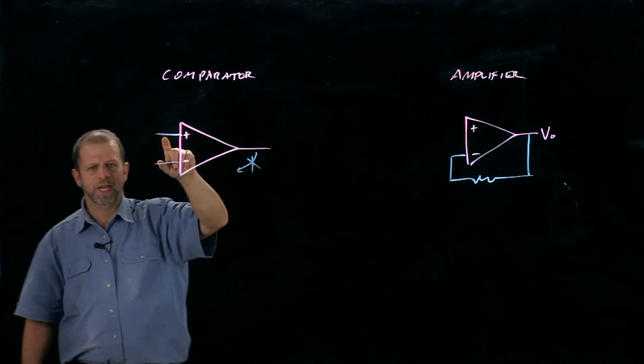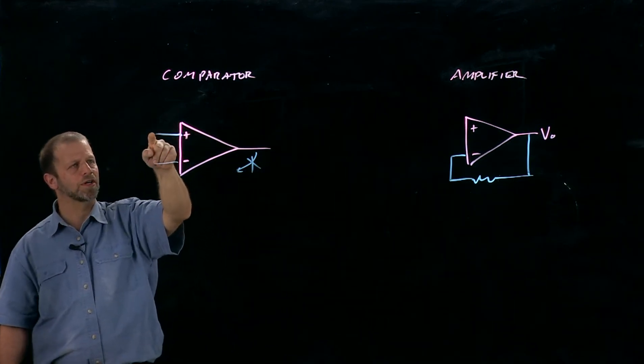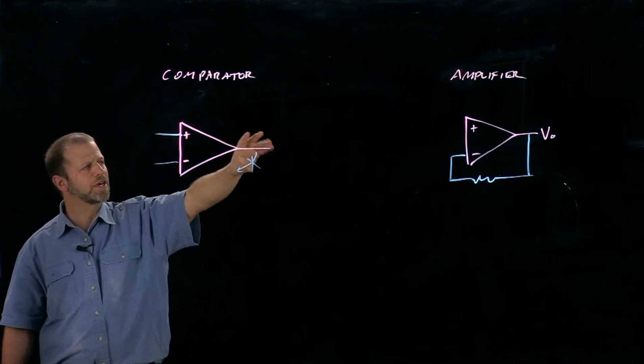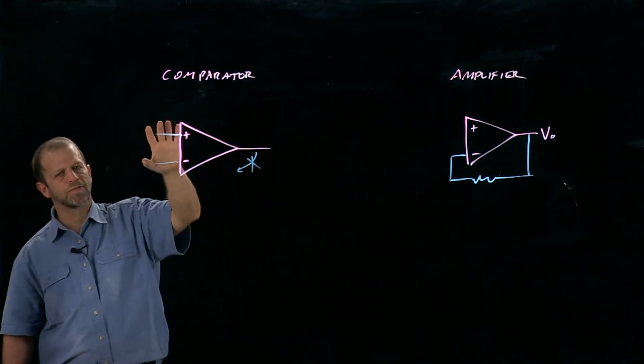In the case of a comparator, it can't do that. No matter what happens, all it can do is change its output in response to these two voltages, and nothing it does with its output is going to affect these voltages.